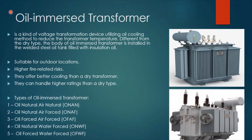The second type is the oil immersed transformer. It is a kind of voltage transformation device utilizing the oil cooling method to reduce the transformer temperature. Different from the dry type, the body of an oil immersed transformer is installed in a welded steel oil tank filled with insulation oil. An oil immersed transformer is suitable for outdoor locations. It has higher fire-related risks, which is why it should be installed outdoors. They also offer better cooling than a dry transformer and can handle higher ratings.